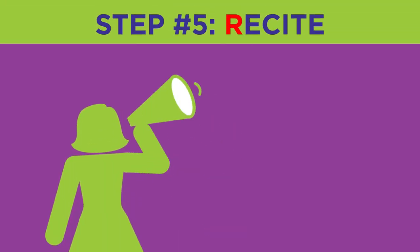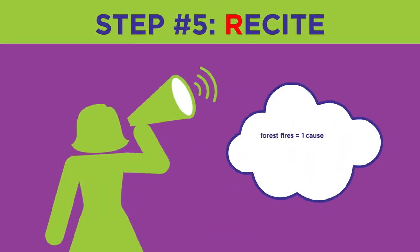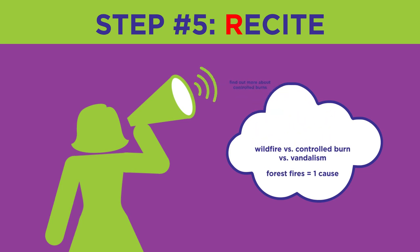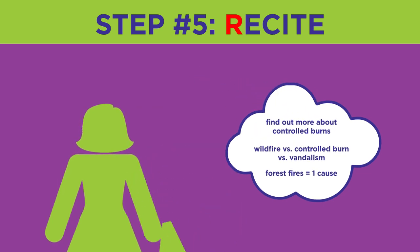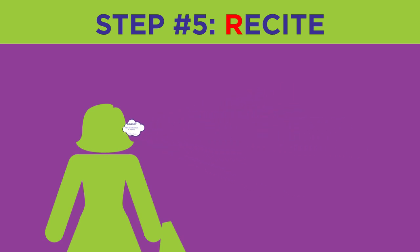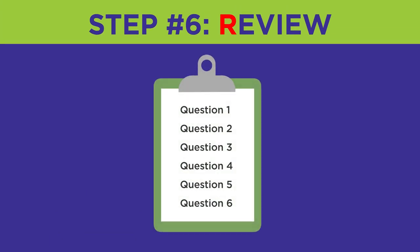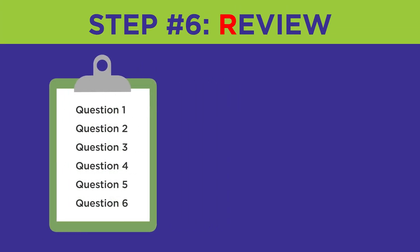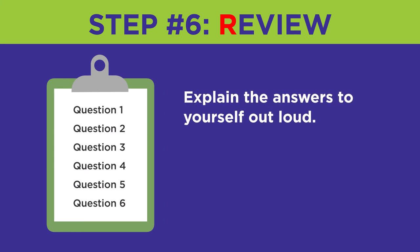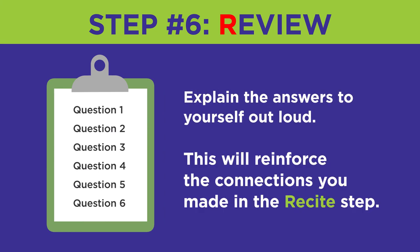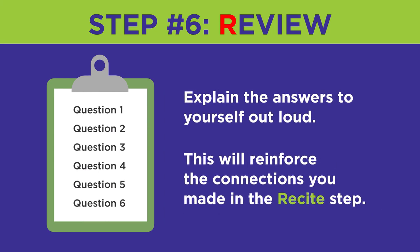When you finish each section of the text, recite your notes by reading them out loud. Reciting your notes will make connections in your brain between what you already know and what you're reading, helping you retain the information for later use. After you finish a few sections of the chapter or article, look at your questions and try to answer them. Can you? Explain the answers to yourself out loud — this will reinforce the connections you made in the recite step.